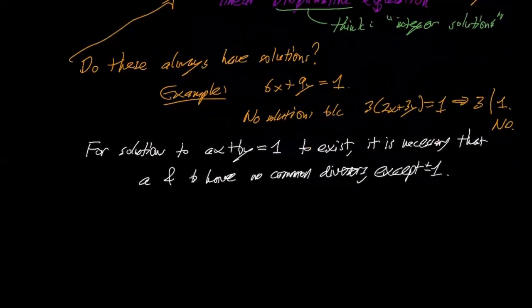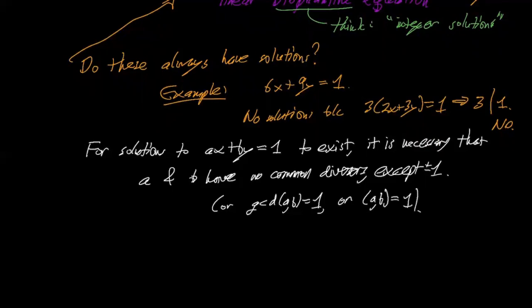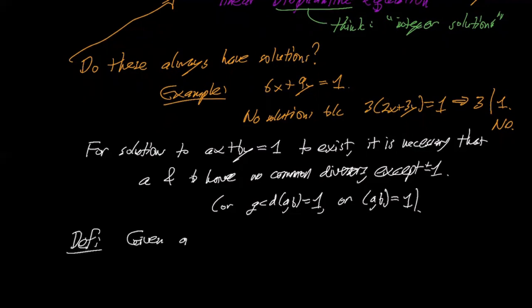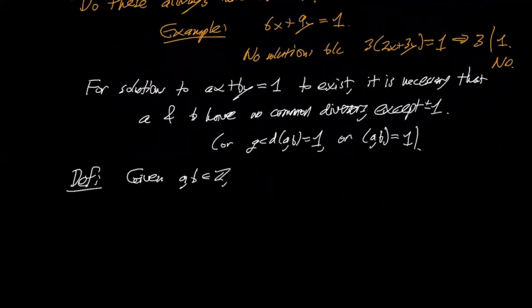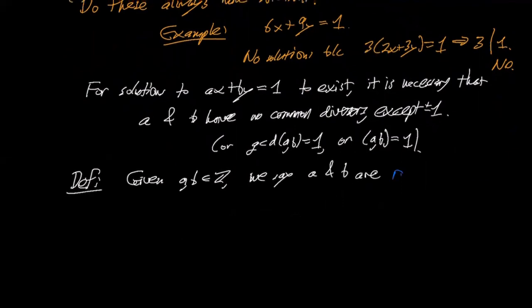And so there's a name for this. It's basically saying that GCD of A and B is 1. Or we use the notation just parentheses A comma B equals 1. GCD of A and B equals 1. Given A and B in the integers, we say A and B are relatively prime if and only if the GCD of A and B is 1. So that's the terminology we have.